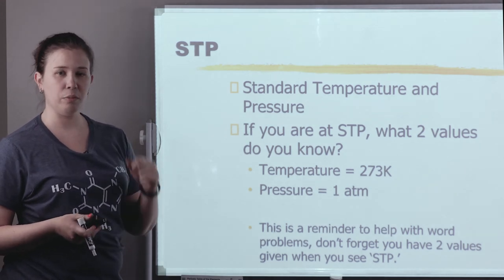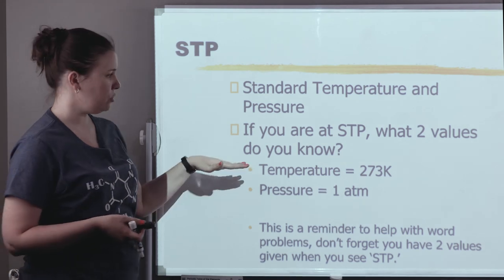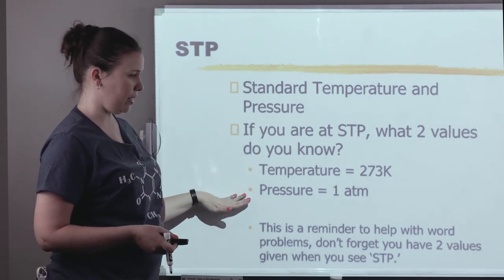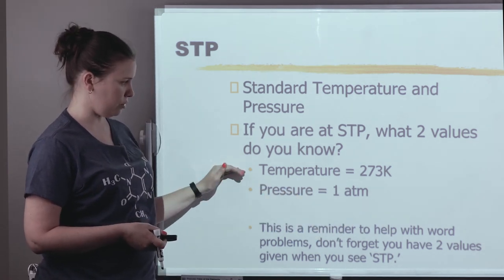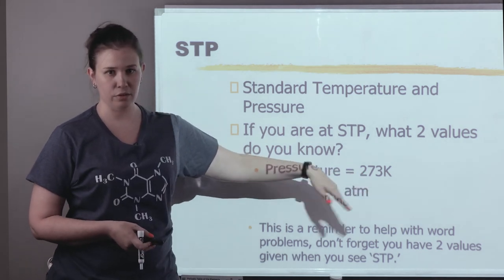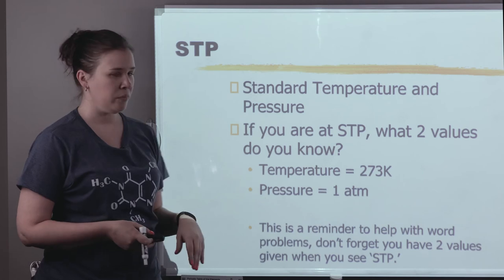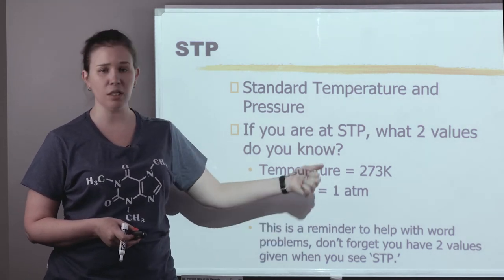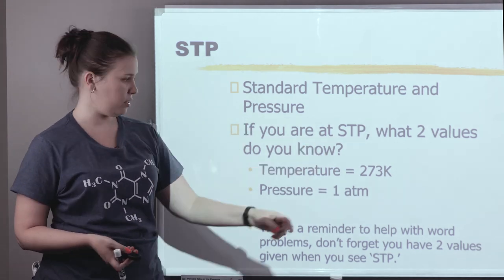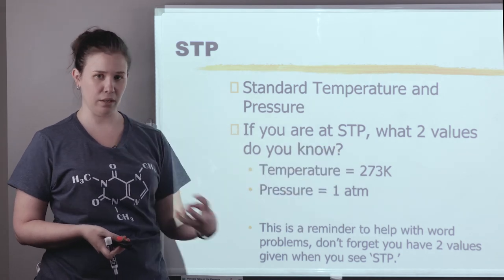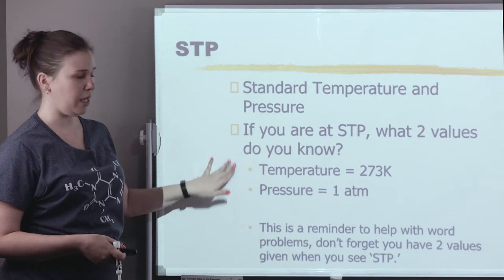Remember our good friend STP: when we had 22.4 liters equal to one mole at STP. STP was always set at 273 Kelvin or zero degrees Celsius and one atm. This can also be called normal pressure. There's no such thing as normal temperature, but normal pressure is one atm, standard pressure is one atm, and standard temperature is 273 Kelvin in gas laws. The catch with word problems is sometimes they will not actually tell you these numbers — they will simply say we are at STP or at standard pressure, and you have to know those words mean these numbers and be able to plug them into formulas.